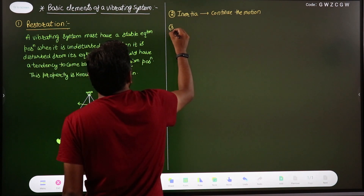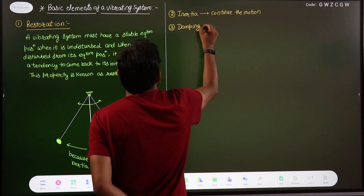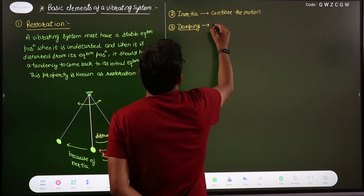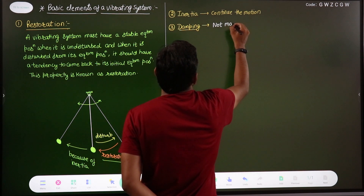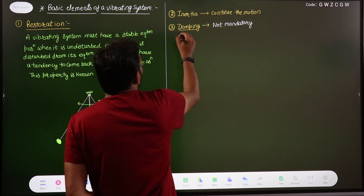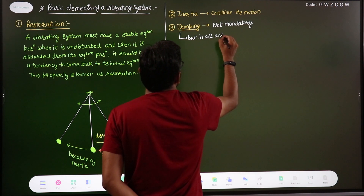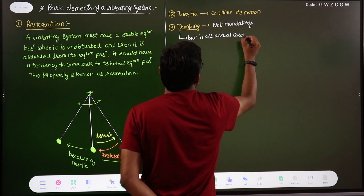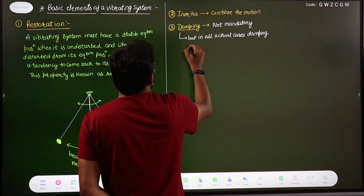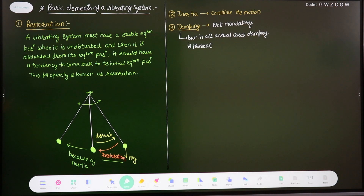The third parameter a vibrating system has is damping. Damping is not mandatory — a system can vibrate without damping. But in all actual cases, damping is present because friction is not zero; friction is inevitable. So in all practical cases, damping is present and you cannot neglect it. It is not a mandatory parameter, but we always require it.